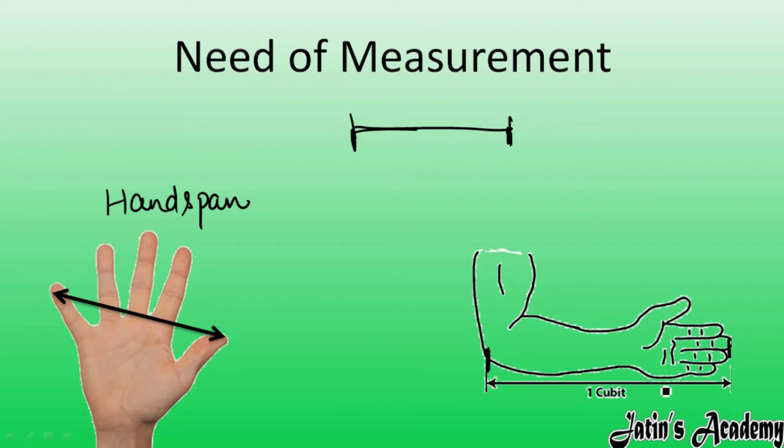Or they were using this kind of cubit. They were using from this forearm to this last finger, like this, they were measuring any length of the material. But same here also, in the cubit also different persons are having different lengths of their cubit, so this is an inaccurate way in order to measure the length of any material.